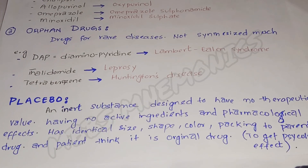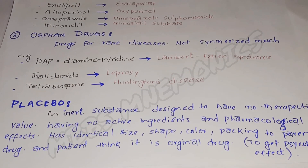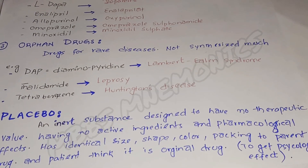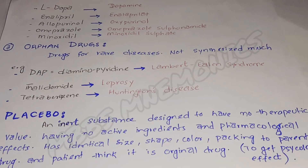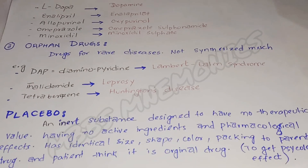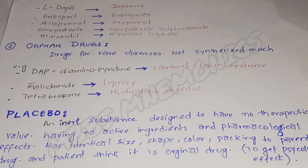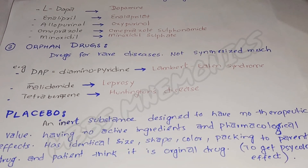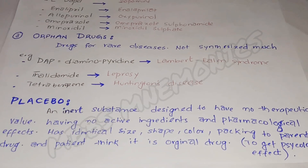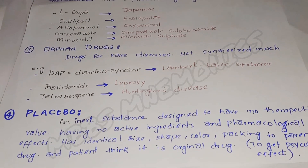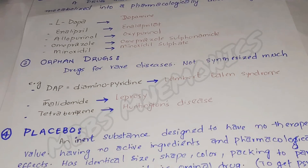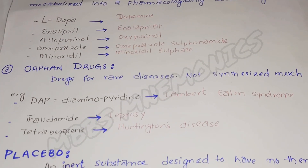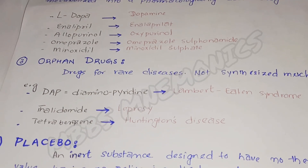Placebo is given just to produce a psychological effect. Patients are given placebo drugs without knowing whether they are receiving the actual drug or a placebo, as it has the same packing, color, and size as the paired drug. Only the pharmacist, manufacturer, and doctor know about the placebo effect for that drug.